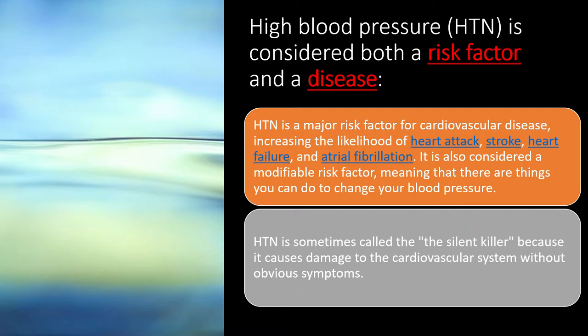High blood pressure and hypertension — abbreviated HTN — is a major risk factor and a disease. It's also a manifestation of underlying problems. When blood pressure goes up, your chances of getting an AMI (myocardial infarction), stroke, heart failure, and AFib go up as well. Hypertension is also known as a silent killer.